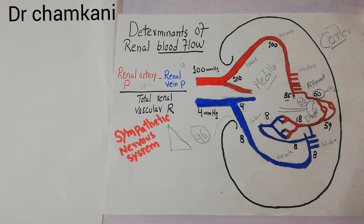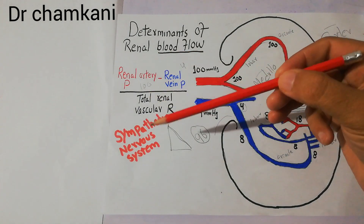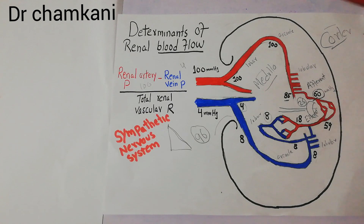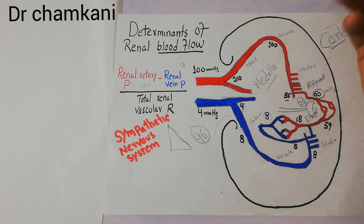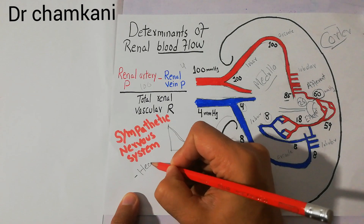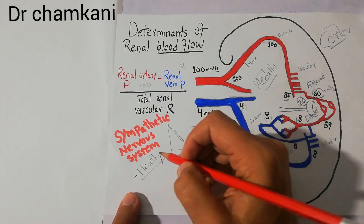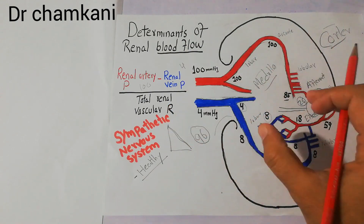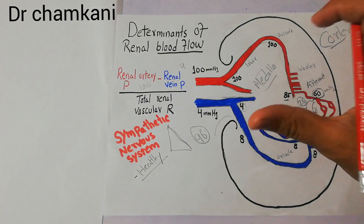Normally in a healthy human being, the sympathetics do not have any role in increasing or decreasing the resistance at the afferent or efferent arterioles, and hence do not affect the glomerular filtration rate or urine formation. In a healthy human being, there is normally no role of sympathetics in controlling blood flow through the kidneys.